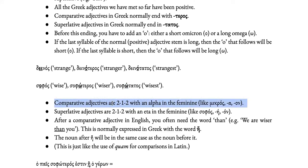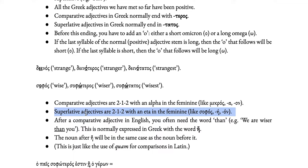Comparative adjectives are 2-1-2: second declension masculine, first declension feminine, second declension neuter, with alpha in the feminine — they go like mikros/mikra/mikron, or logos/kora/doron. Superlative adjectives are also 2-1-2 but with eta in the feminine — more like sophos/sophē/sophon, going like logos in masculine, mikra in feminine, doron in neuter. In English, when you use a comparative adjective you often need the word 'than' afterwards, for example: we are wiser than you.